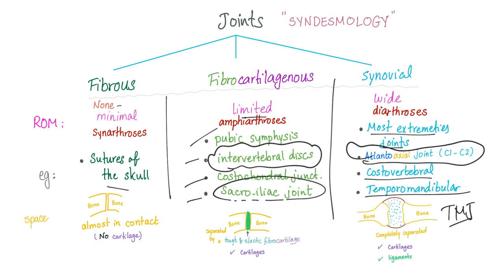Rheumatoid arthritis. The hallmark of the disease is synovitis. Therefore, rheumatoid only involves the synovial joints. That's why rheumatoid arthritis can involve the atlantoaxial joint between C1 and C2. Rheumatoid does not involve fibrocartilaginous joints — therefore, no involvement of the intervertebral disc, with the exception of C1 and C2.